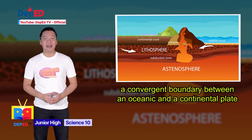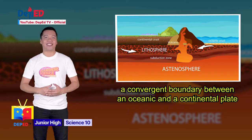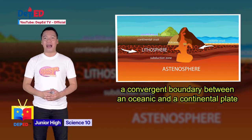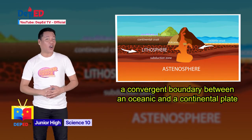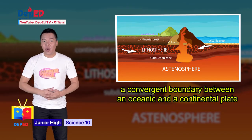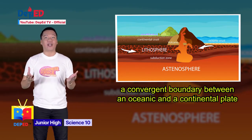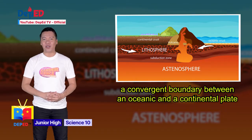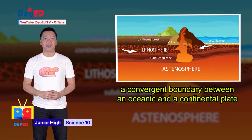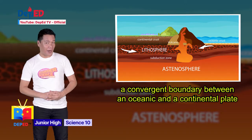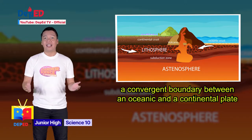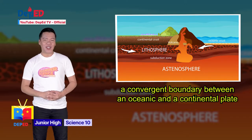This experiment demonstrates the processes that occur along a convergent boundary between an oceanic and a continental plate. Remember, the continental crust curves upward on top of the oceanic crust due to its lesser density. The oceanic crust, due to its greater density, stays below.